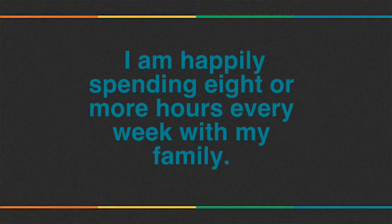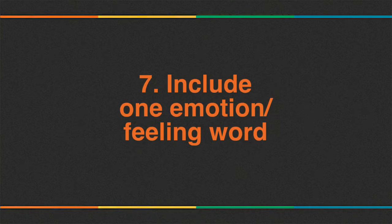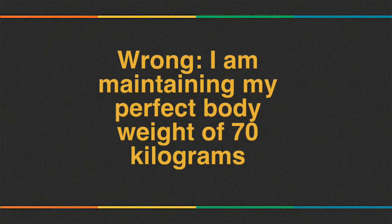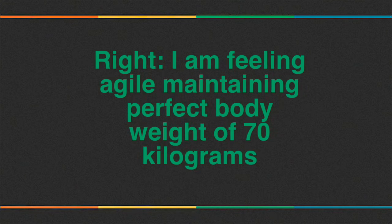Number 7: Include one emotion or feeling word. Here is a wrong affirmation without any feeling word: 'I am maintaining my perfect body weight of 70 kilograms.' The right way would be 'I am feeling agile, maintaining perfect body weight of 70 kilograms.'